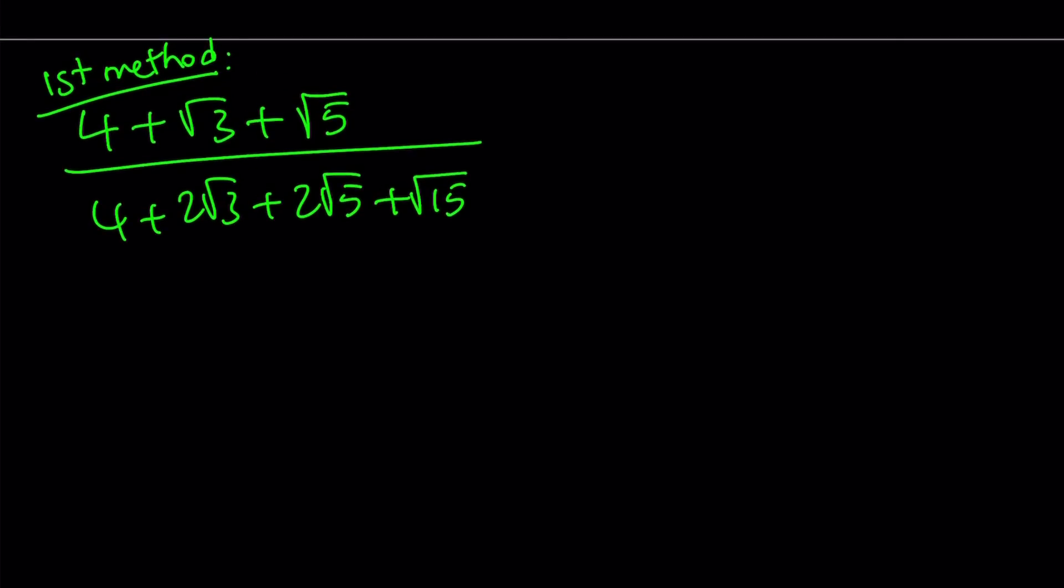So we have the following expression: 4 plus the square root of 3. By the way, this is the first method. We have 4 plus root 3 plus root 5, that is divided by 4 plus 2 root 3 plus 2 root 5 plus root 15. Now, let's see what we can do here.